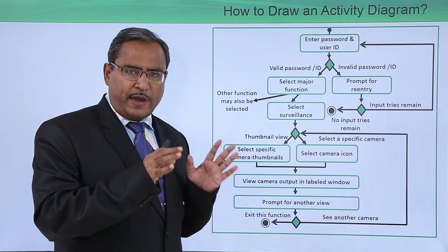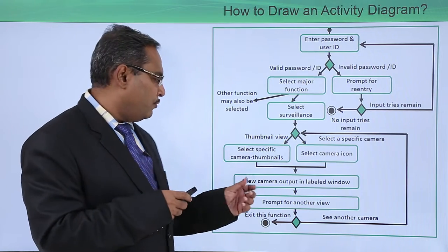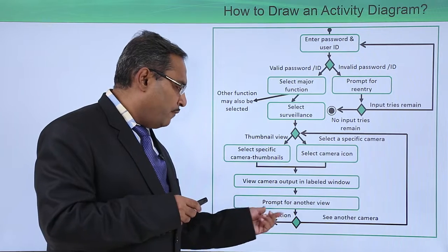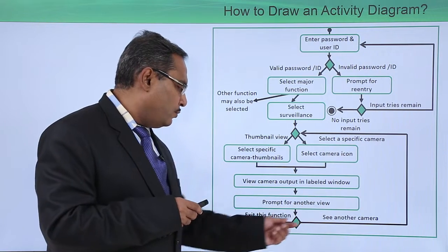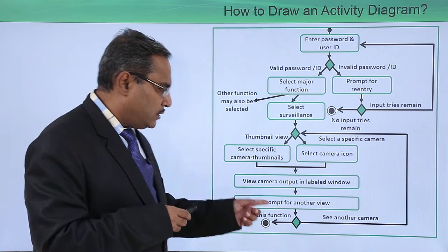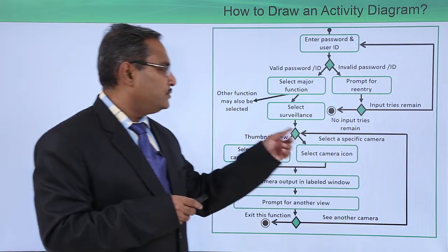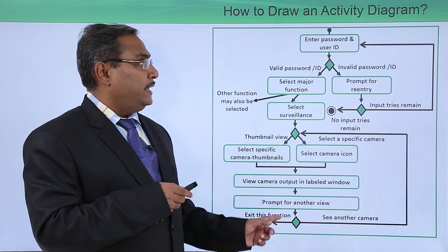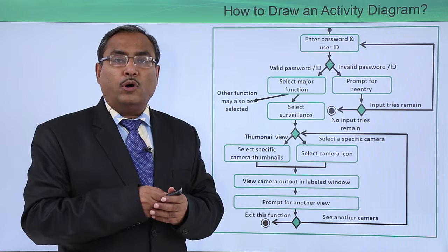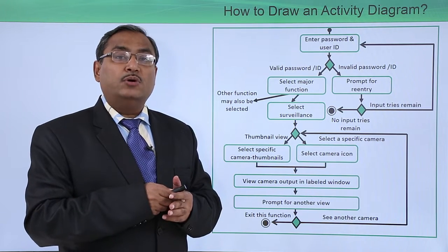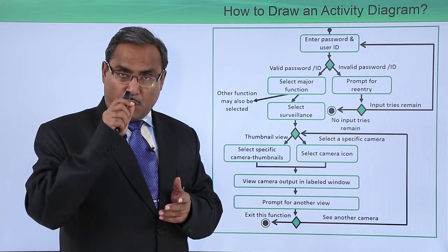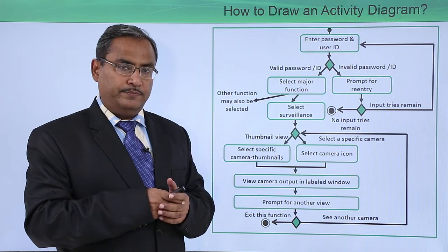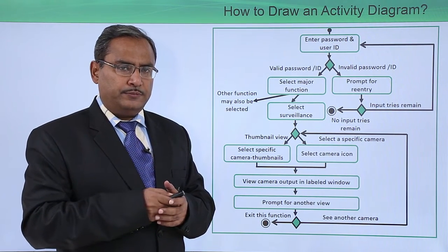In the activity diagram, we have the control flow. The user can view the camera output in a labeled window, and is then prompted for another view — either exiting the function or selecting another camera. So in this case study, a respective operation was selected and the activity diagram was drawn on it. Thanks for watching this video.